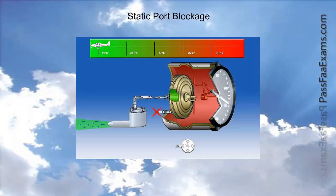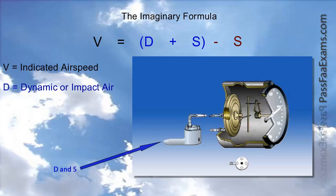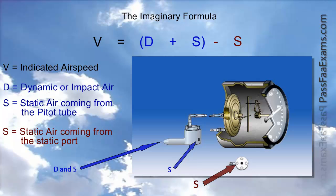Okay, another way to answer test questions is through a simple mathematical process. Let's introduce this imaginary formula. V equals D plus S minus S, where V is the velocity of the aircraft, the true airspeed. D is the dynamic or impact air. The first S is the pressure of the static air entering from the pitot tube or the drain hole, and the second S is the static air entering from the static port.